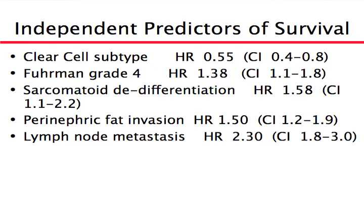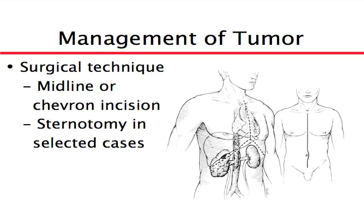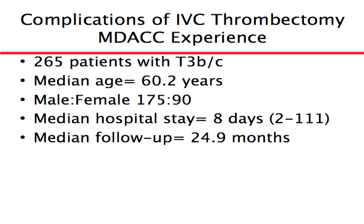These are predictors of survival that help us identify which patients might benefit from surgery. If you have the clear cell type, there is a higher chance of surviving after surgery. If you have a high grade — grade four, sarcomatoid histology, invasion into the fat of the kidney, or spread to lymph nodes — the chance of survival becomes less. Typically, these are big operations done through large incisions, either a sideways or up-and-down incision, depending on surgeon preference.